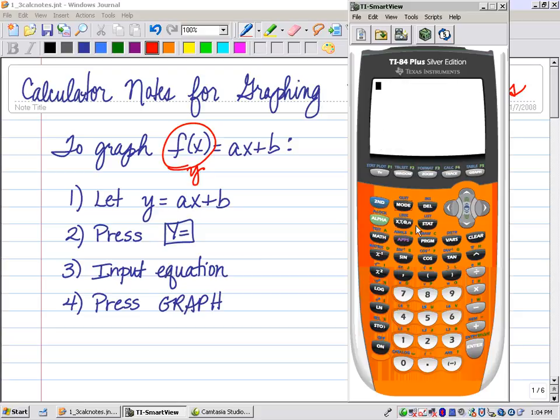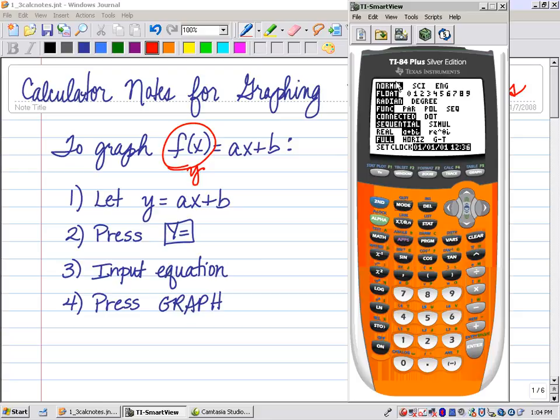Now, some other things you need to be familiar with to make sure you're in the right window. If you press the mode key, you should be in the normal mode. Floating just refers to how many decimal places are being shown, so just leave it on float. Radian and degree is when you get into pre-calculus. But this is the key: you want to be in the function mode, not parametric, polar, or sequence mode. Make sure you're in function. Also connected right now you want to be in. The other things don't really matter at this point, though I would suggest probably the full mode is better. Horizontal and graph table, they'll show you more things at one time than just the graph.